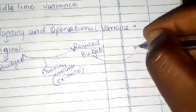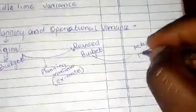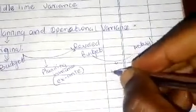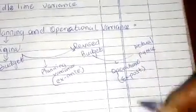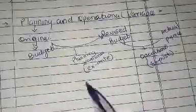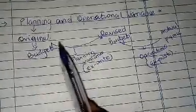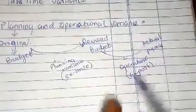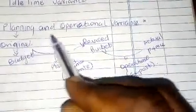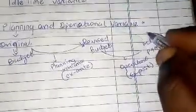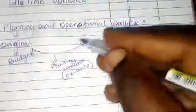Now when you compare the revised budgets with the actual performance — the actual results — that is called the operational variance, and we call it ex-post. So the planning variance compares original with revised budgets, and the operational variance compares the revised budgets with the actual results. Before, in simple variance analysis, we always compared original budgets with actual budgets directly.